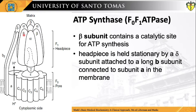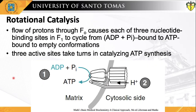Each beta subunit contains a catalytic site for ATP synthesis. The headpiece is held stationary by a delta subunit attached to a long B subunit connected to subunit A in the membrane. ATP synthase carries out rotational catalysis in which the flow of protons through FO causes each of three nucleotide binding sites in F1 to cycle from ADP plus inorganic phosphate bound, to ATP bound, to empty conformations. This way, three active sites take turns in catalyzing ATP synthesis.